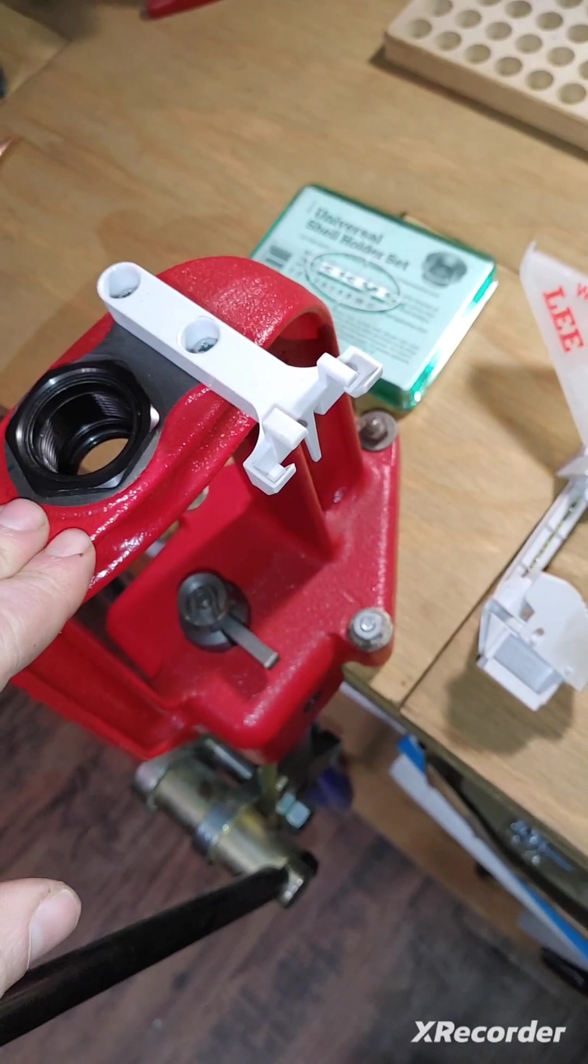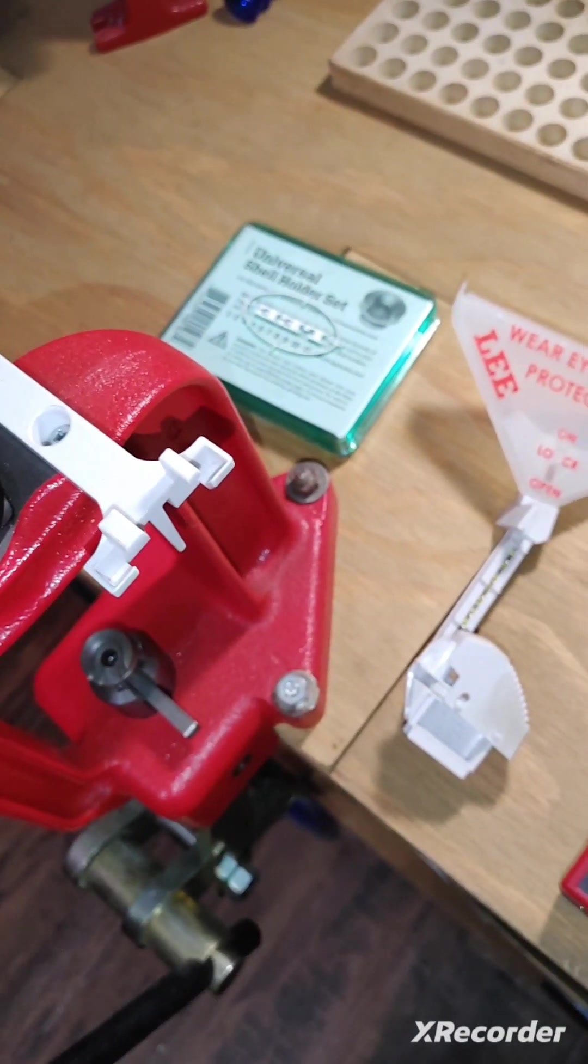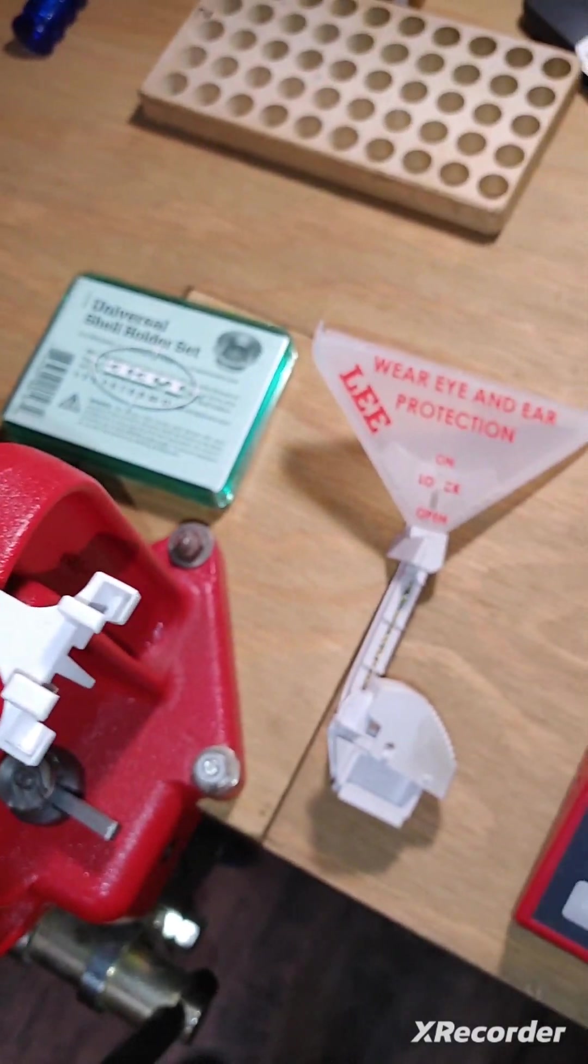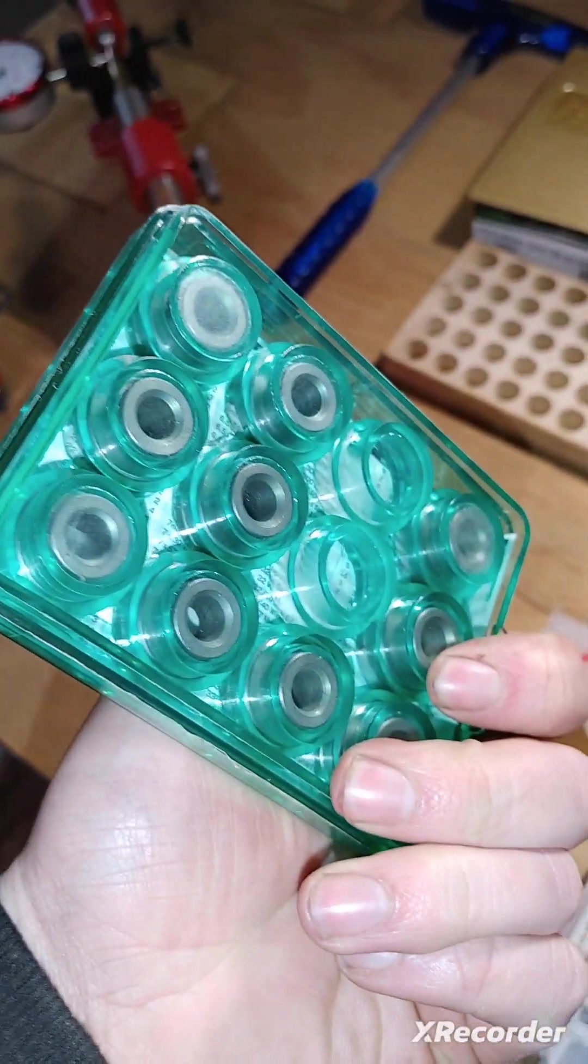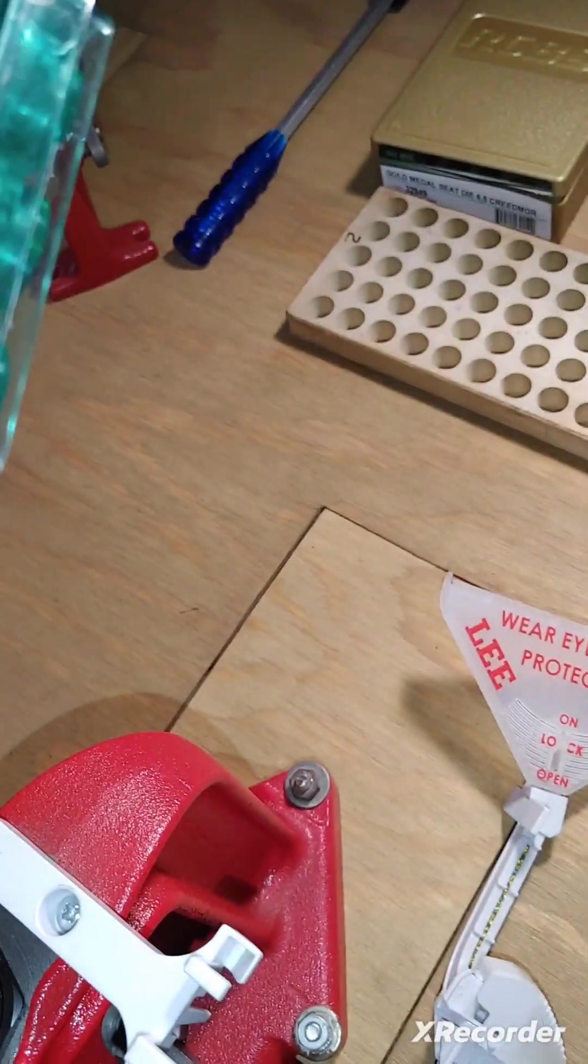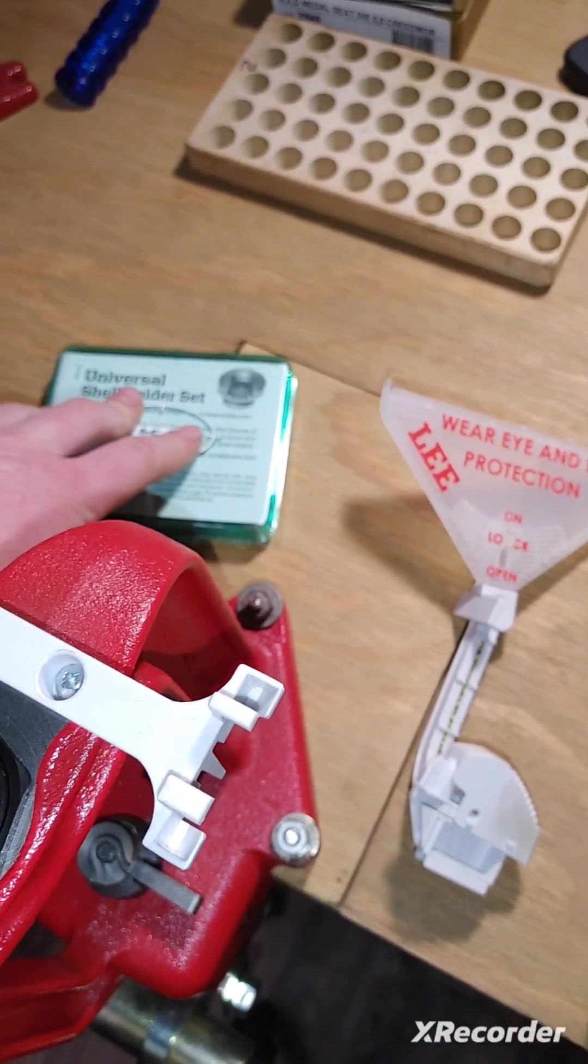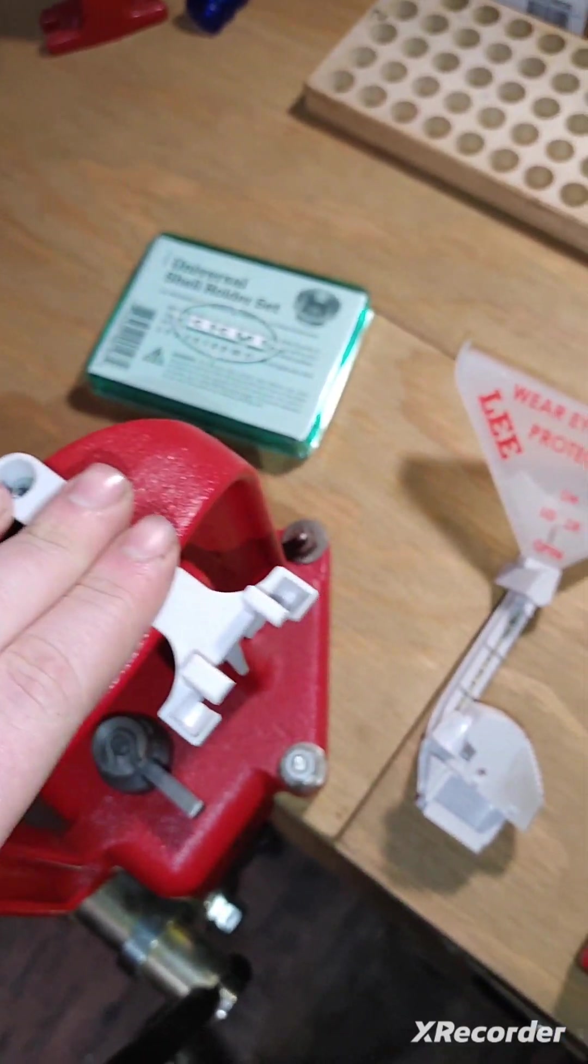So here we got our Lee Classic Series Press. You can pick this up for around 190 bucks I think. I suggest getting a whole set of shell holders. I believe you can pick that set up for like 36 bucks or so. I highly recommend getting this set up too.